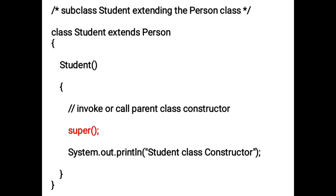Next I am writing the child class or subclass. It extends the superclass, so the class name is Student and it extends Person. In the subclass I am writing one constructor method named Student. Inside the method body I am writing the super keyword with open-close braces and semicolon to call the superclass constructor — this must appear as the first line. Then I write an output statement that prints 'student class constructor'.